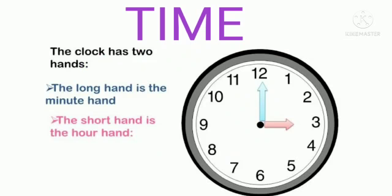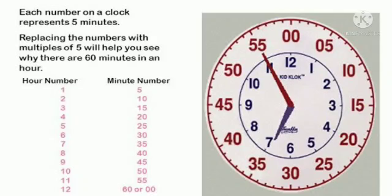Clock has a long hand that indicates the minutes and a short hand that indicates the hours. The hour hand takes one hour to move from one number to the next. The minute hand takes one hour to go all around the clock.